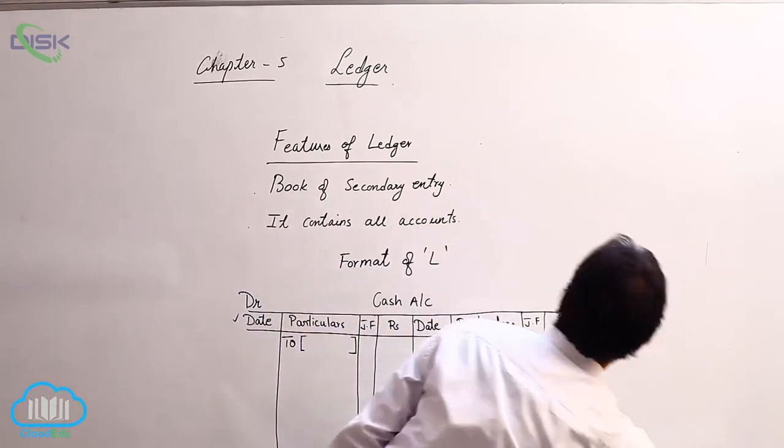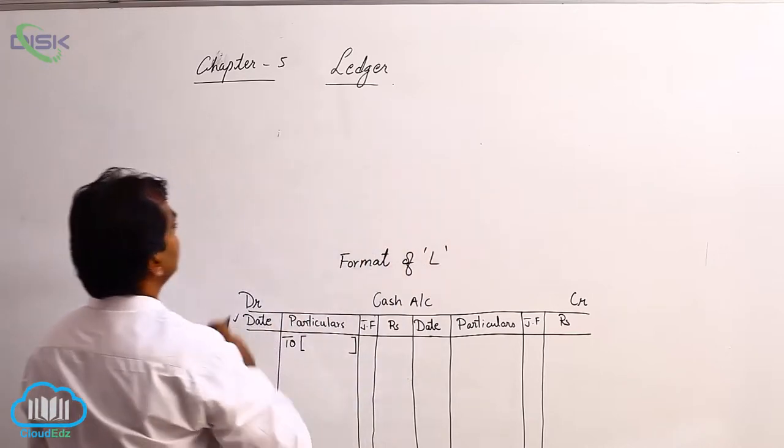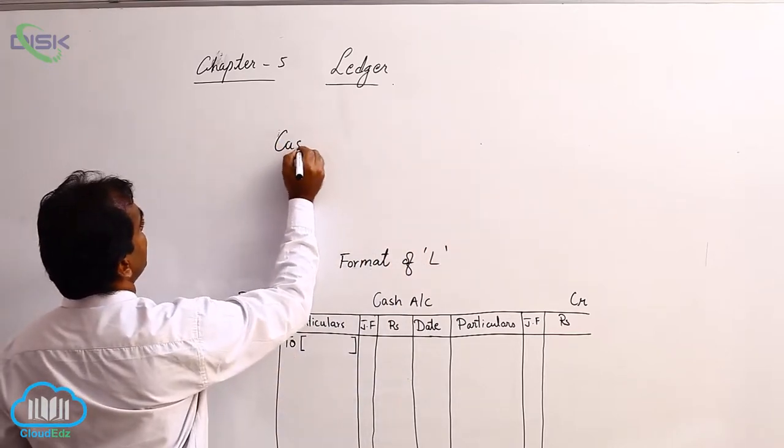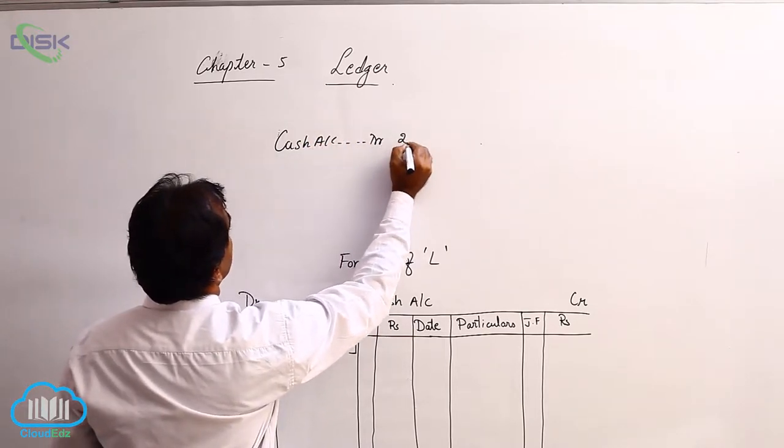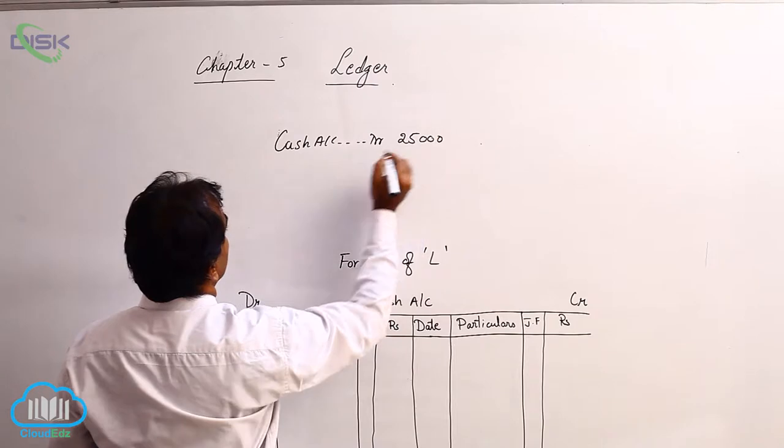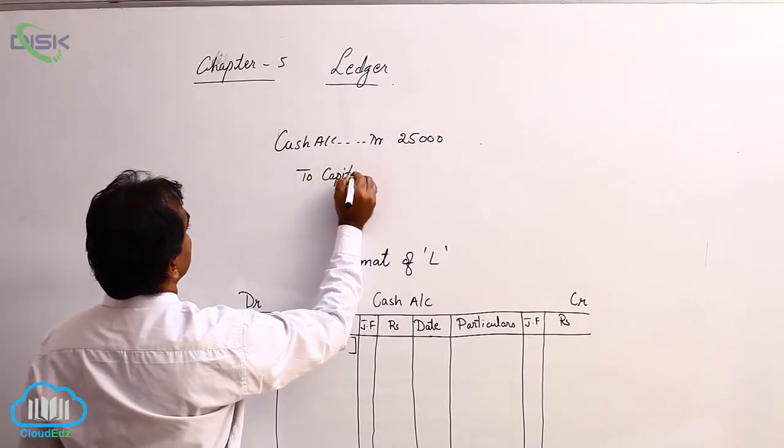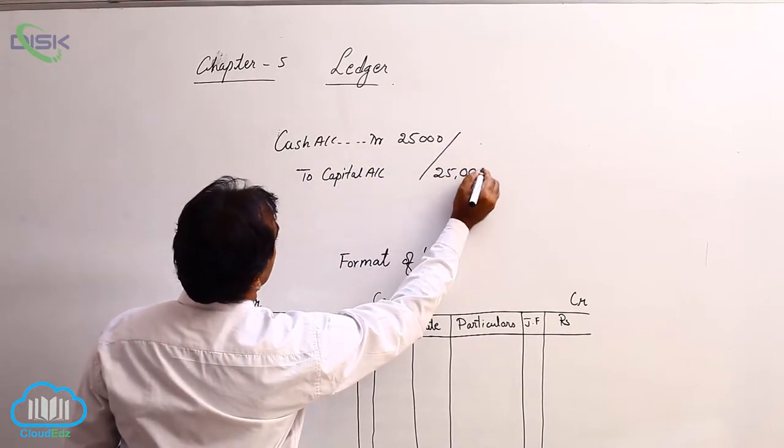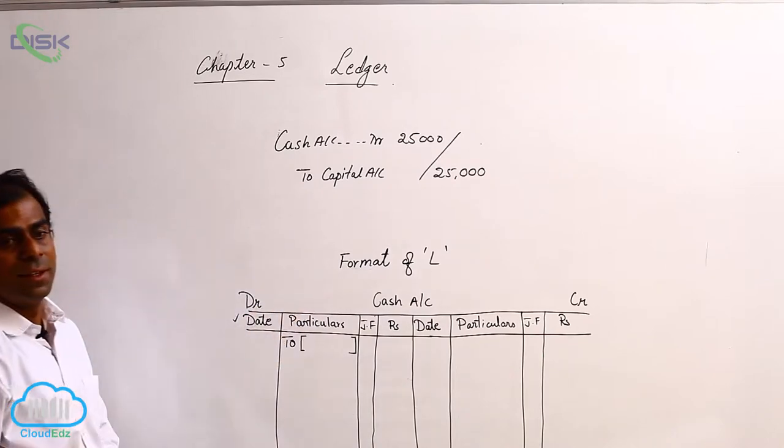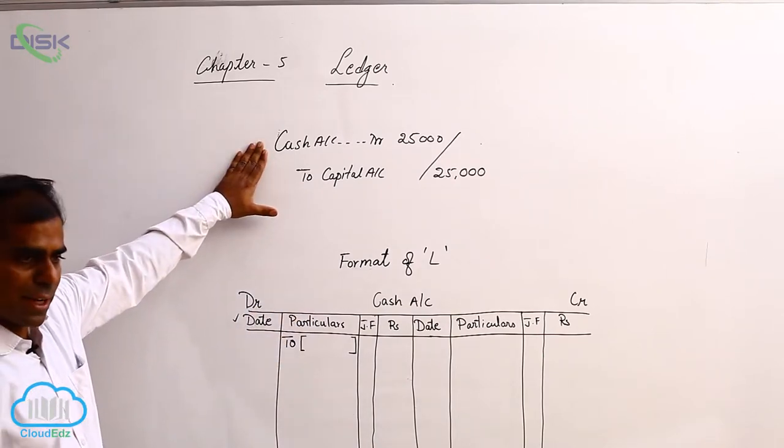For example, if I take the journal entry, cash account debit, let us say 25,000, to capital account 25,000. Let us assume this is a journal entry and in this, we have debited cash.